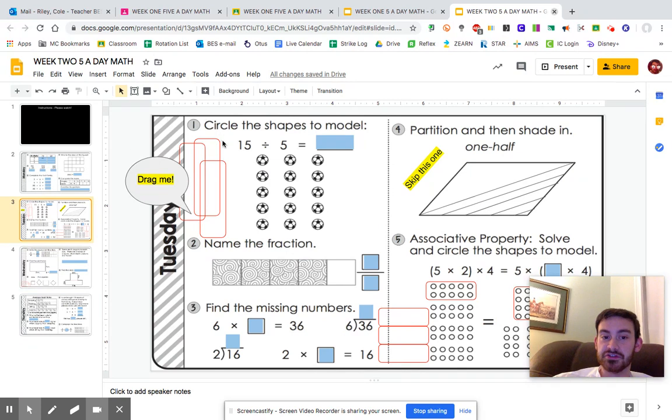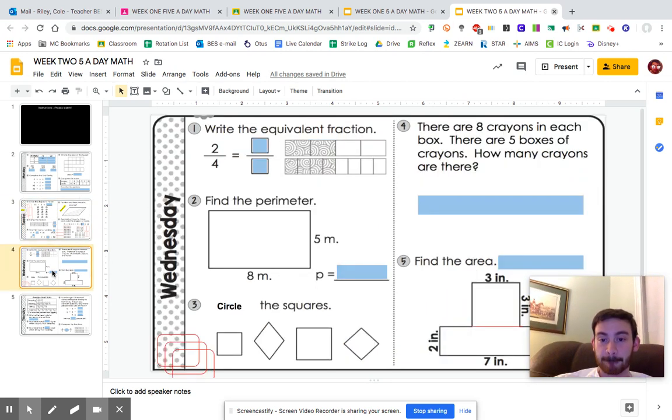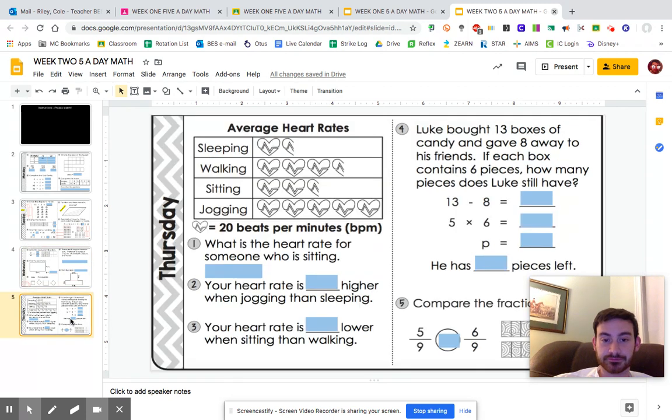On Tuesday, you have to circle the shapes by dragging the circles. On number four, I did it for you because it's hard to draw, so skip that. On Wednesday, circle the squares by dragging the boxes. Thursday is simply typing in the boxes.